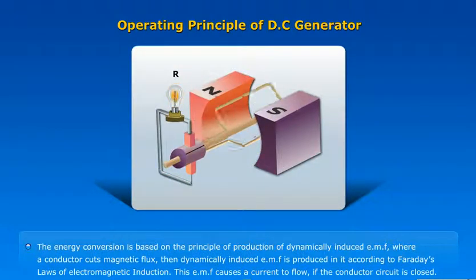The energy conversion is based on the principle of production of dynamically induced EMF, where a conductor cuts magnetic flux. Then dynamically induced EMF is produced in it according to Faraday's laws of electromagnetic induction. This EMF causes a current to flow if the conductor circuit is closed.